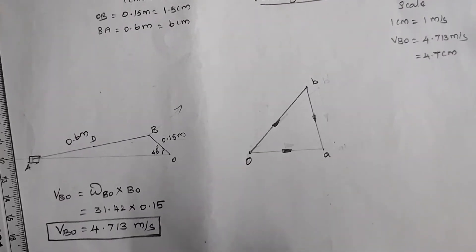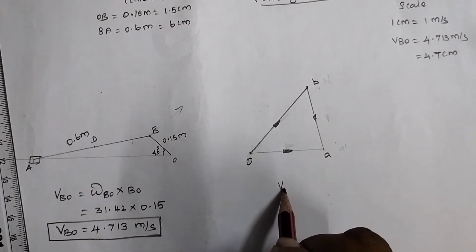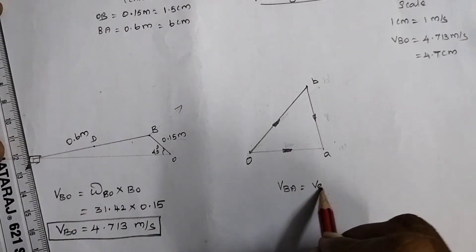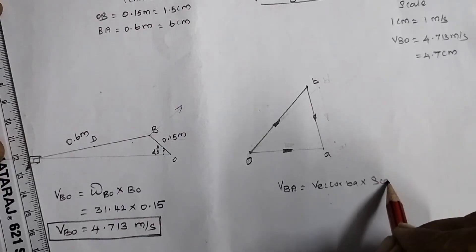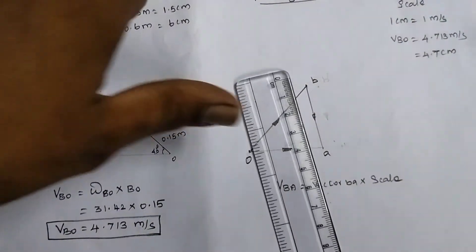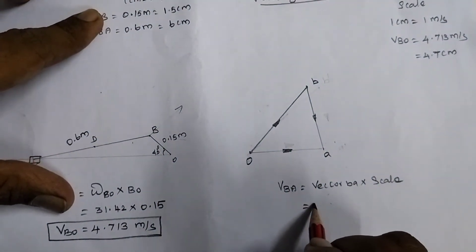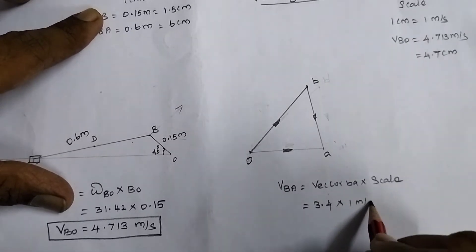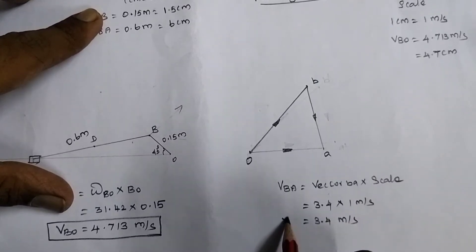The velocity of link AB (VBA) equals vector BA length multiplied by scale. Vector BA measures 3.4 cm, so VBA = 3.4 × 1 = 3.4 m/s. This is the velocity of the connecting rod.